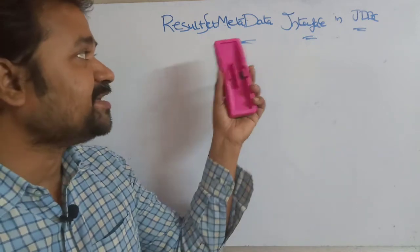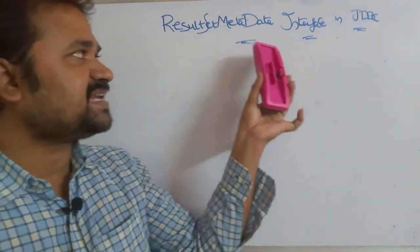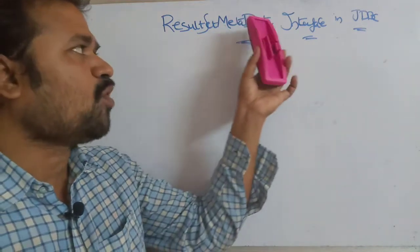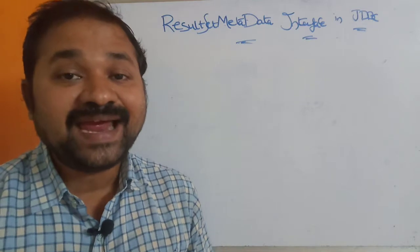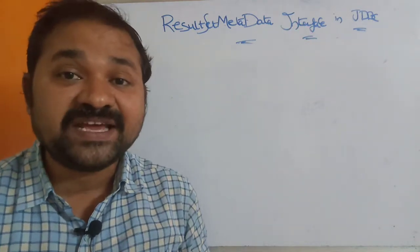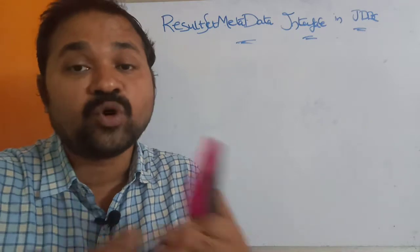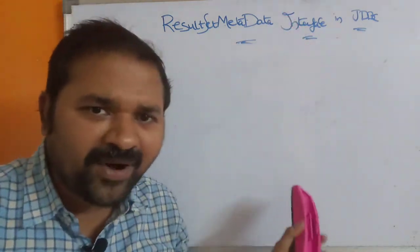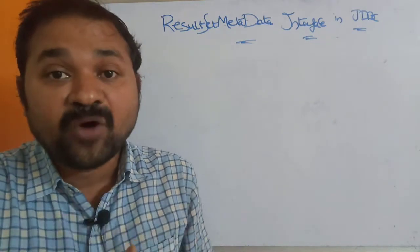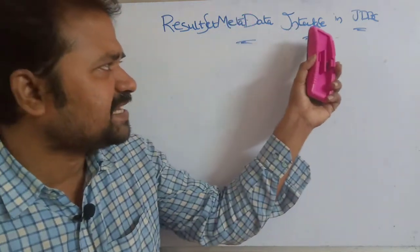In this video, we are going to discuss the ResultSet Metadata interface in JDBC. ResultSet Metadata interface is present in the java.sql package. Metadata means data about the data. By using ResultSet Metadata, we can get information about the table — like how many columns are there, what is the column name of each column, and what is the type of each column. We get all those details with the help of the ResultSet Metadata interface.